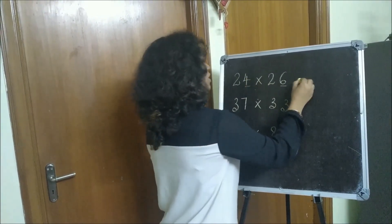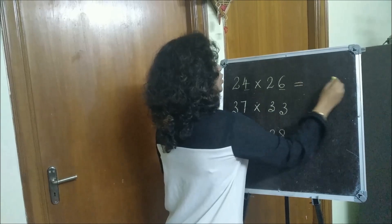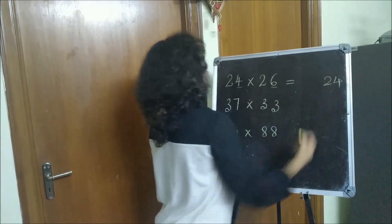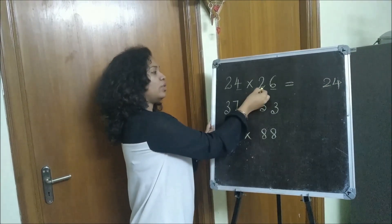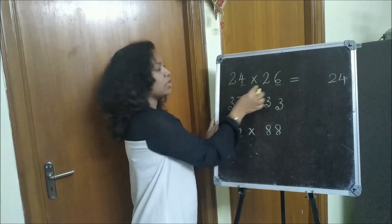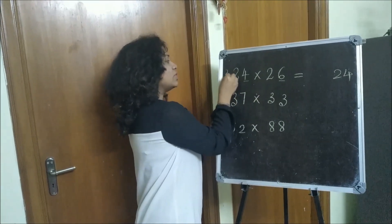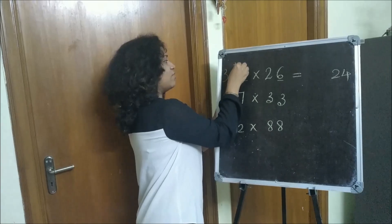6 into 4 is 24 and 2 into 2, no. 2 into 3 we should do. We should add 1 here.